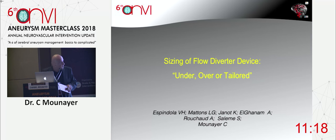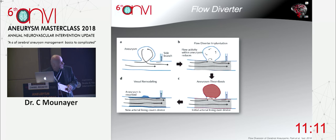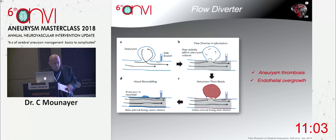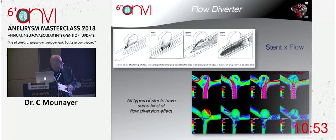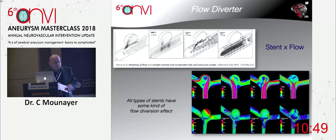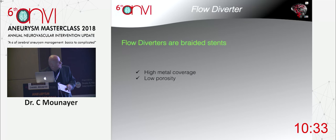I will explain why I don't undersize flow diverters. When you put a flow diverter, what's the effect on the aneurysm? We are looking to exclude the aneurysm by thrombosis inside. We create an anatomical reconstruction of the artery. All stents we use are flow diverters — the key is to increase the metal coverage and lower the porosity over the neck. The size of the stent is really very important to obtain flow diversion.